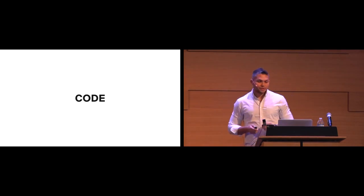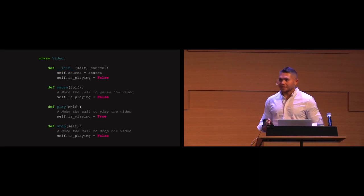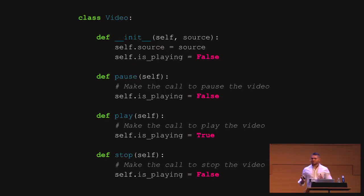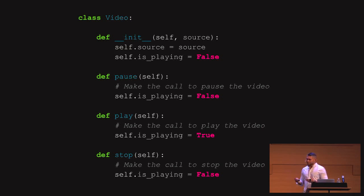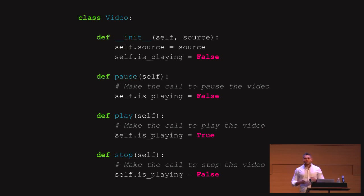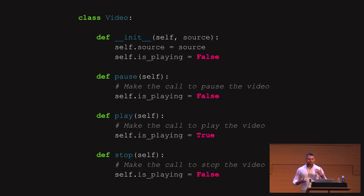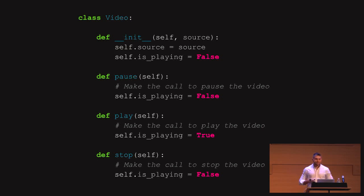Let's jump right into the code. Here we have a video class that receives a source — the source of the video — and initializes a source attribute with the given source. It also initializes a boolean attribute called isPlaying, set to false, because at the beginning the video is not playing. This class provides three functions: pause, play, and stop. When you call pause, self.isPlaying is set to false. When you call play, self.isPlaying is set to true. And when you call stop, self.isPlaying is set to false.